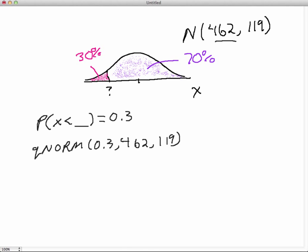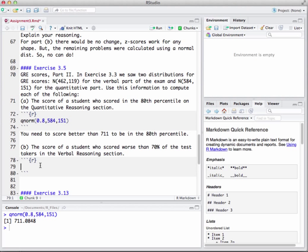So we come down here and we type in Q norm. Put in my area of 0.3, my mean of 462, and my standard deviation of 119. Let's go ahead and run that chunk so we can see what that's going to look like.